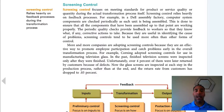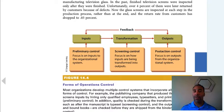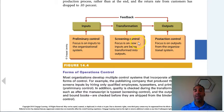Screening control relies heavily on feedback processes during the transformation process — the keyword is feedback. Get a lot of feedback and we can improve a process; without feedback, you cannot fix a process. You have the input, then transformation — screening control focuses on how inputs are being transformed into outputs. Make sure that if we need to fix anything in this process, we do so. And outputs: post-action control focuses on the outputs from the organization after the transformation process. Did they look good? Did people like them? What was wrong? Let's send out surveys and fix whatever is wrong.